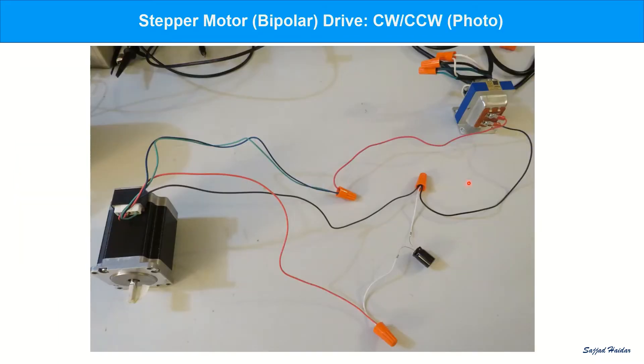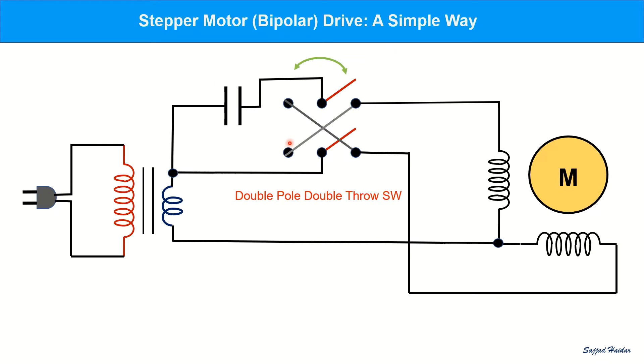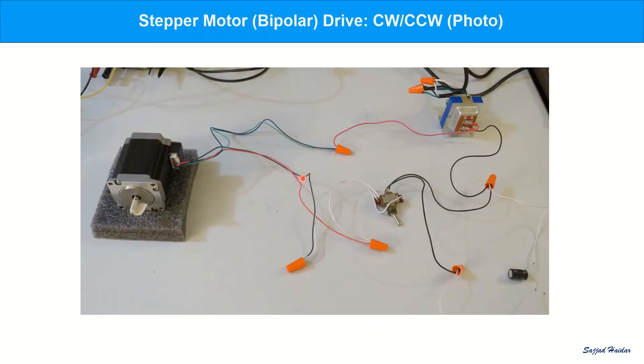The complete circuit is shown here in this photo, the transformer, the capacitor and the motor. To reverse the direction of rotation, we can use a double pole double throw switch. This photo shows the circuit with the double pole double throw switch as well.